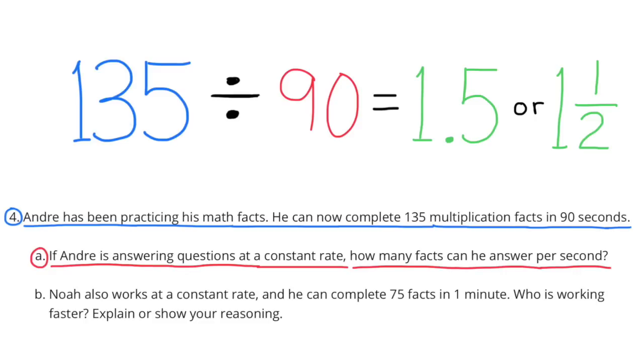Number 4. Andre has been practicing his math facts. He can now complete 135 multiplication facts in 90 seconds. A. If Andre is answering questions at a constant rate, how many facts can he answer per second? 135 divided by 90 equals 1 and 5 tenths or 1 and a half. It takes Andre 1 and a half seconds to answer one fact.